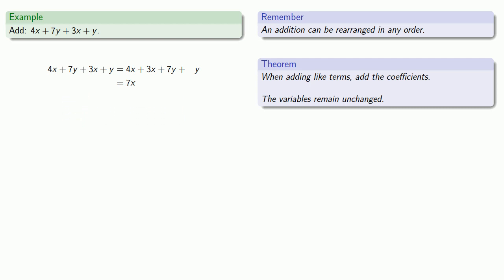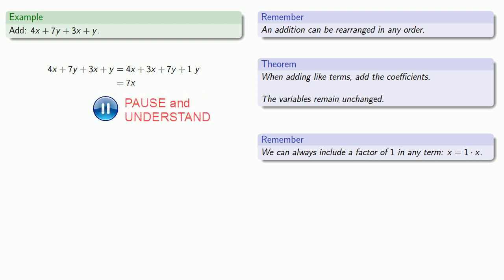7y and y are like terms, but there's a problem. y doesn't appear to have a coefficient. Well, actually it does. Remember, we can always include a factor of 1 in any term. So x equals 1 times x. y equals 1 times y. And so now my y terms have coefficients 7 and 1, and I'll add them together to get my coefficient of the sum, 8. So my sum is going to be 7x plus 8y.